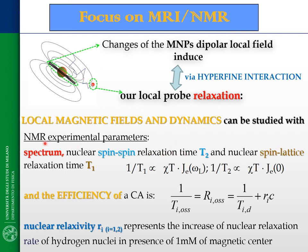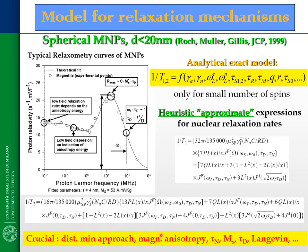So if we study NMR experimental parameters like spectrum, spin-spin nuclear relaxation times T2, and nuclear spin-lattice relaxation times T1, we can study the local magnetic field induced by nanoparticles and the spin dynamics of our nanoparticles. In particular, for MRI applications, it is important to evaluate the efficiency of the nanoparticles as contrast agents through the nuclear relaxivity, which represents the increase of the nuclear relaxation rate of hydrogen nuclei per unit concentration of magnetic centers.